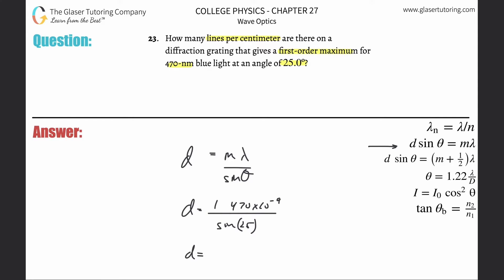So 470 times 10 to the minus 9th divided by sine of 25. The distance here is about 1.11 times 10 to the minus 6th meters, which is basically meters per line.